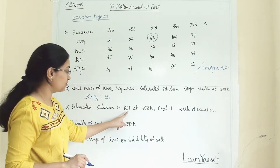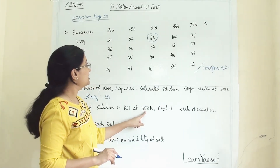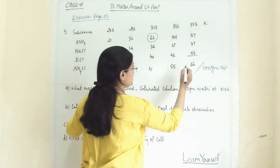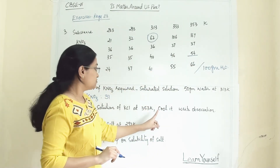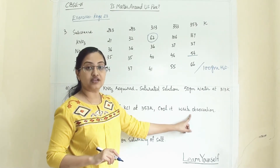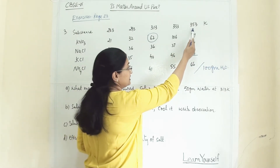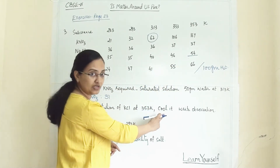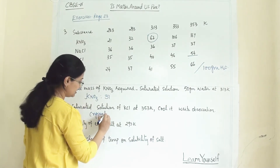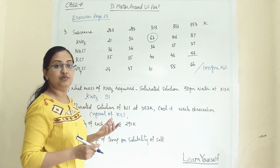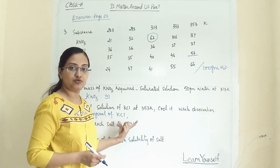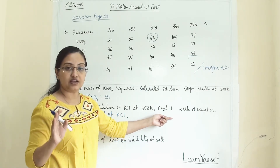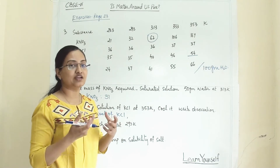Next: a saturated solution of potassium chloride is made at 353 Kelvin and then cooled. We will observe crystallization of potassium chloride — crystals will form as the solution cools. However, this observation applies only if the cooling is gradual. If the cooling is rapid, we will get an amorphous substance instead.